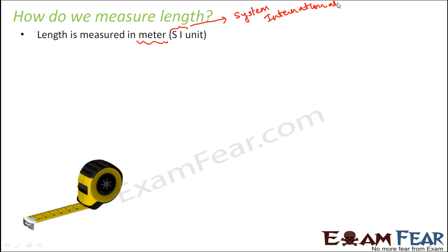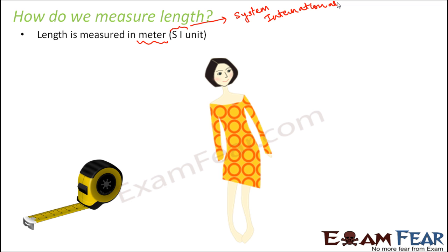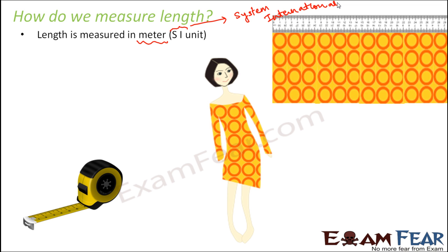But the standardized and internationally accepted unit is meters. Other units also exist — like kilometers, decimeters, centimeter, millimeter — but meter is the standard one. For example, when you have to stitch a cloth, you measure how many meters of cloth you need. Maybe two meters is sufficient for a dress — you tell the shopkeeper you need two meters of this cloth, and that's how you precisely know how much cloth is needed.